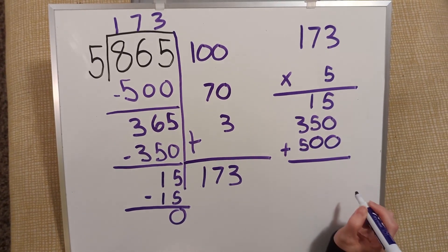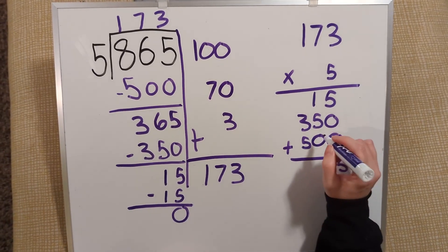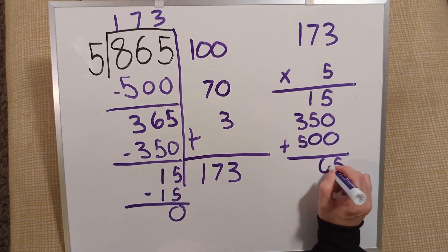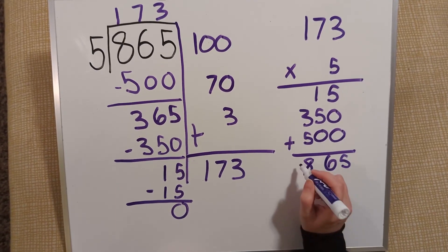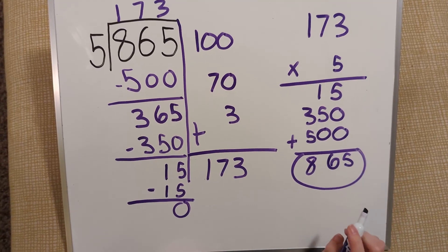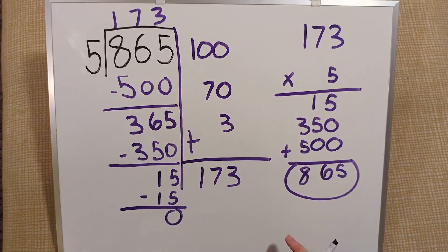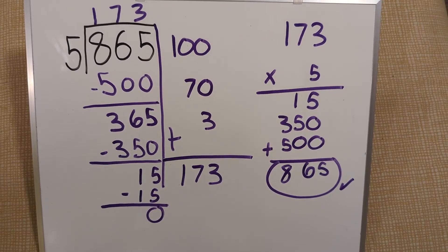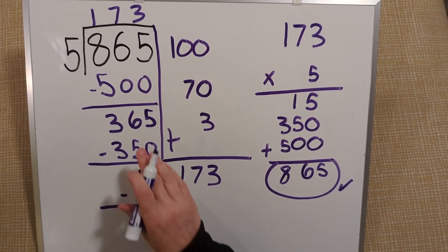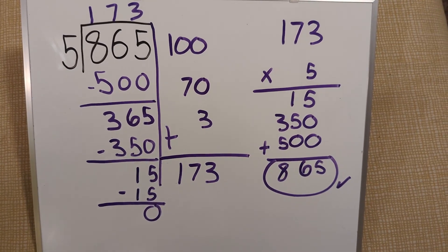I now add up my partial products. 5 plus 0 is 5. 5 plus 1 is 6. 5 plus 3 is 8. So my product is 865. Which matches my dividend in my first problem. So therefore I know I have done my math correctly. This is partial quotient and partial product strategies for solving multiplication and division.